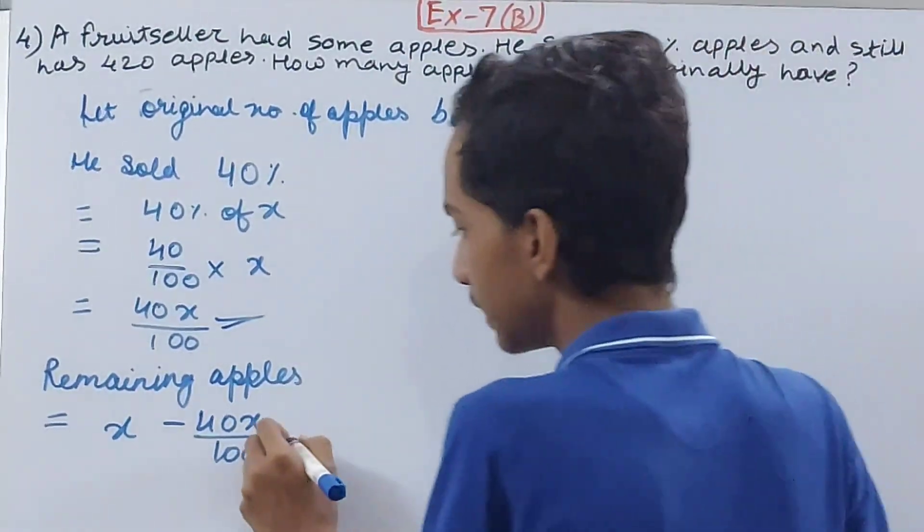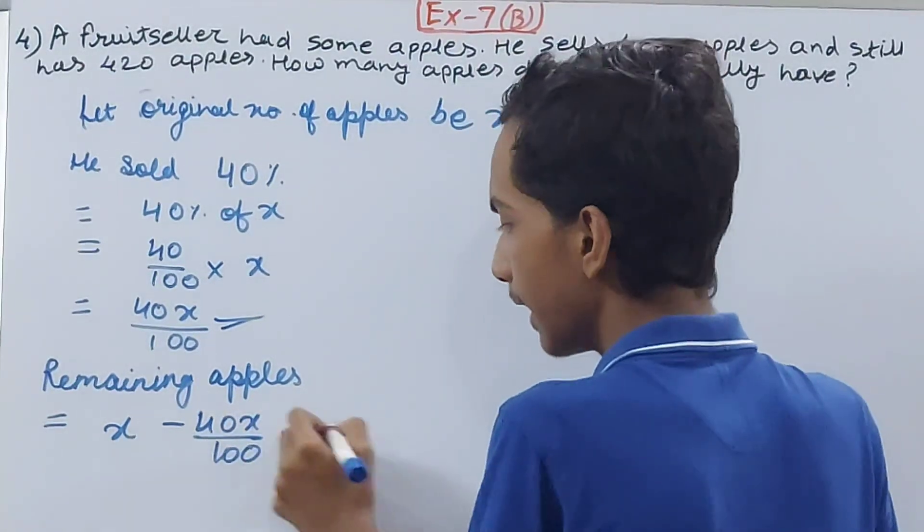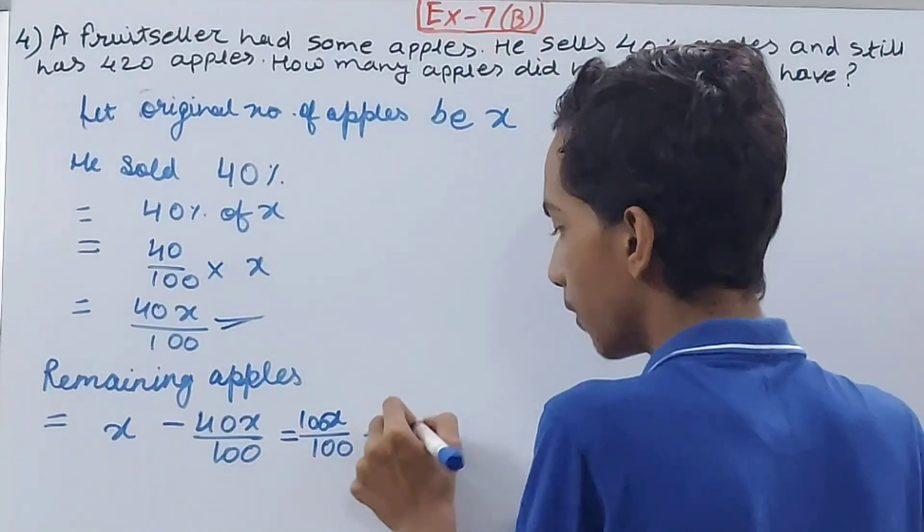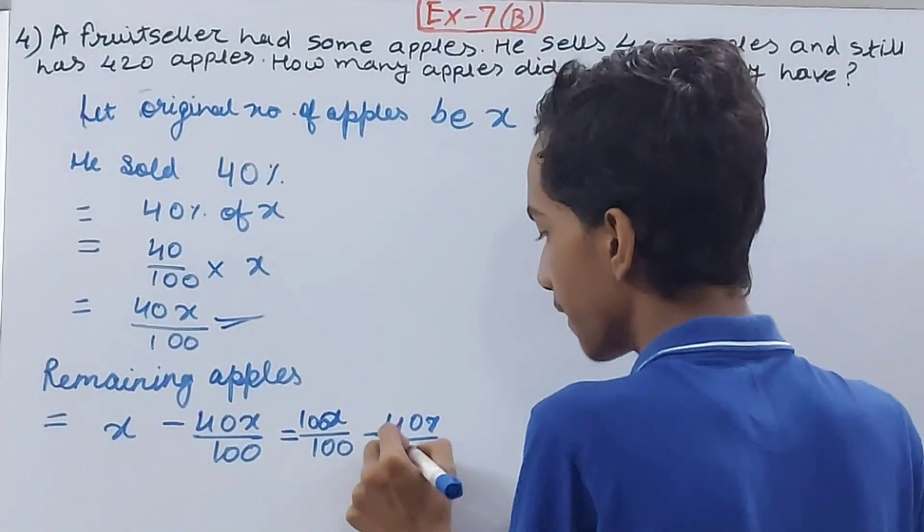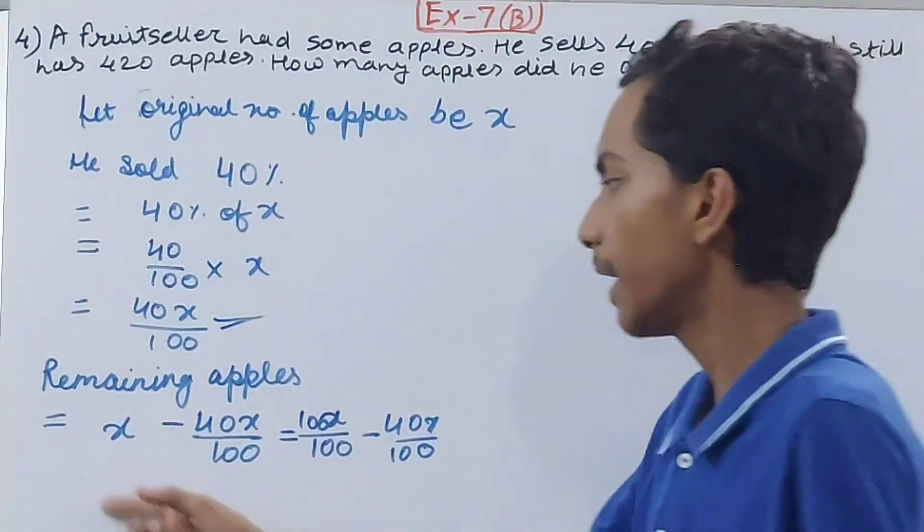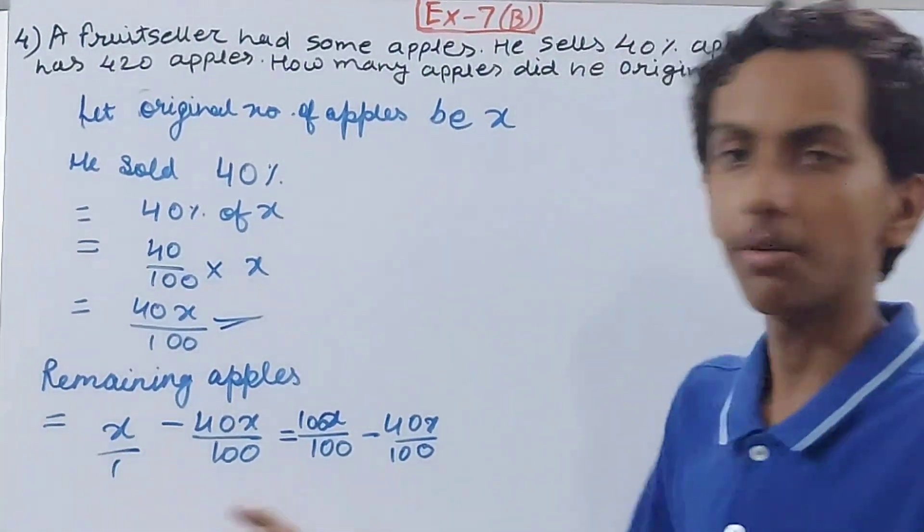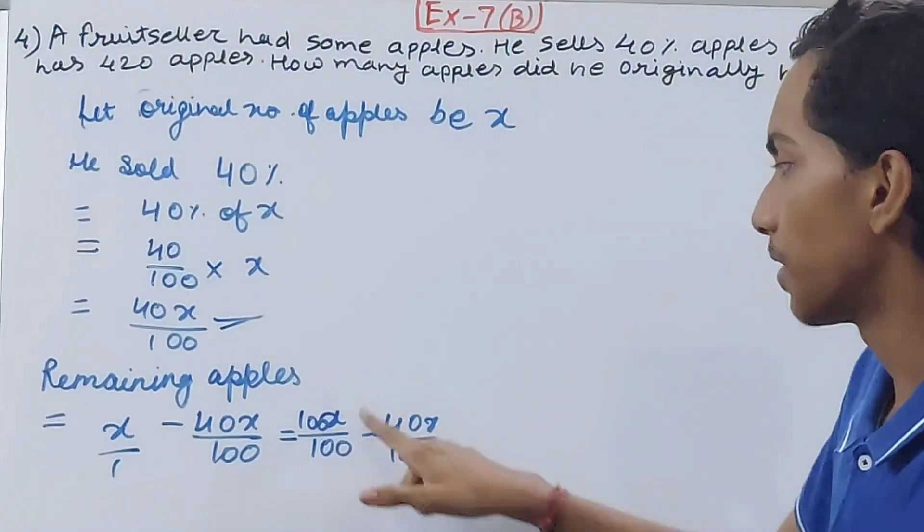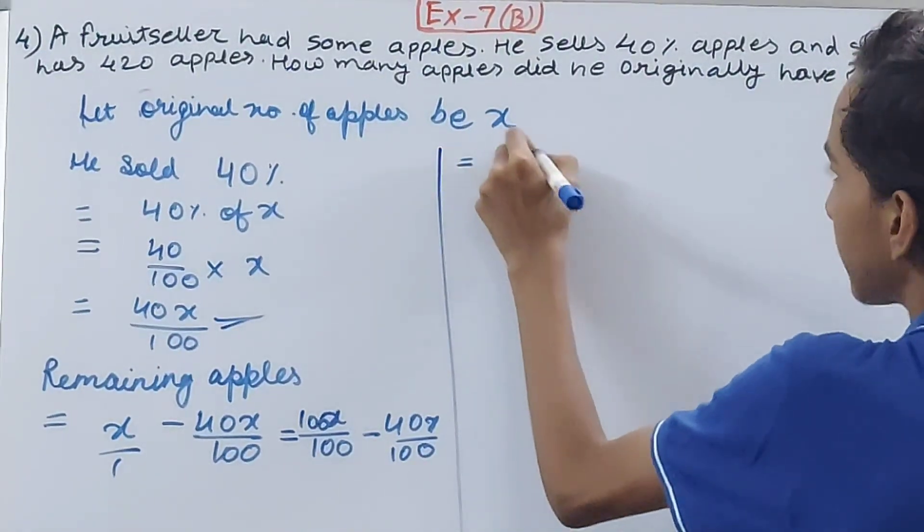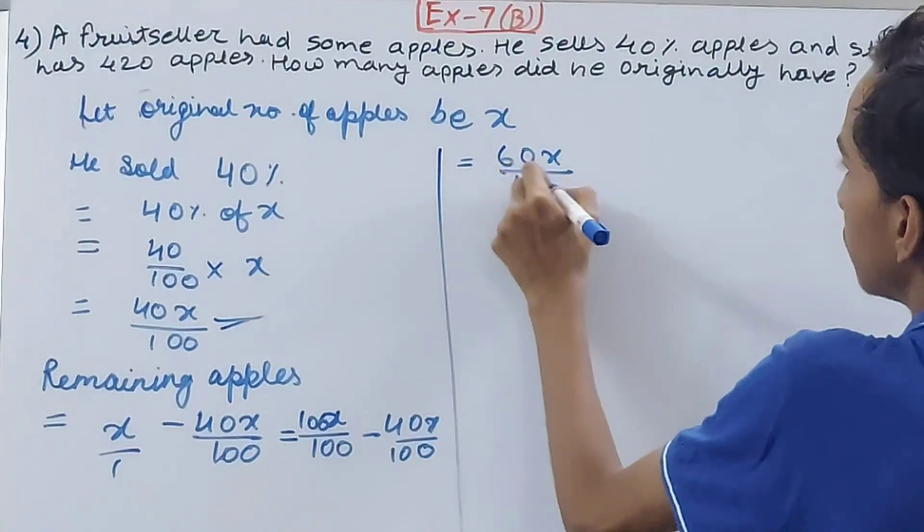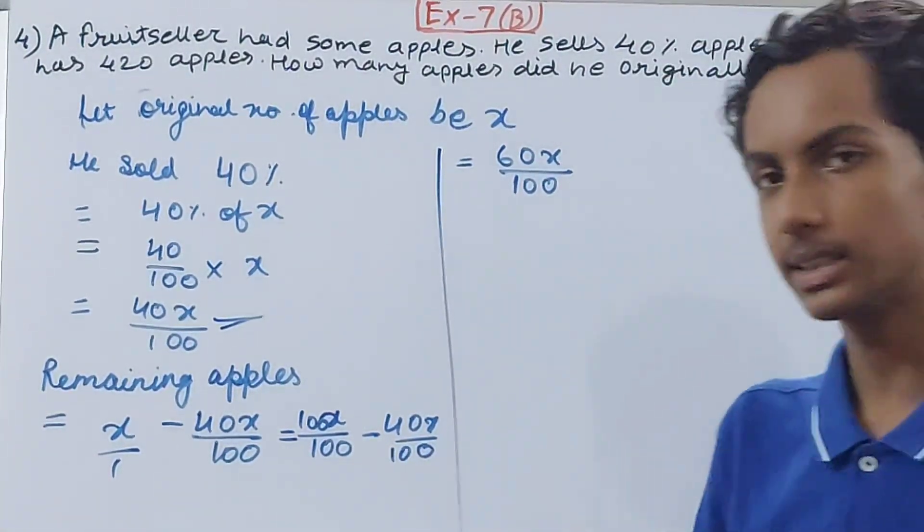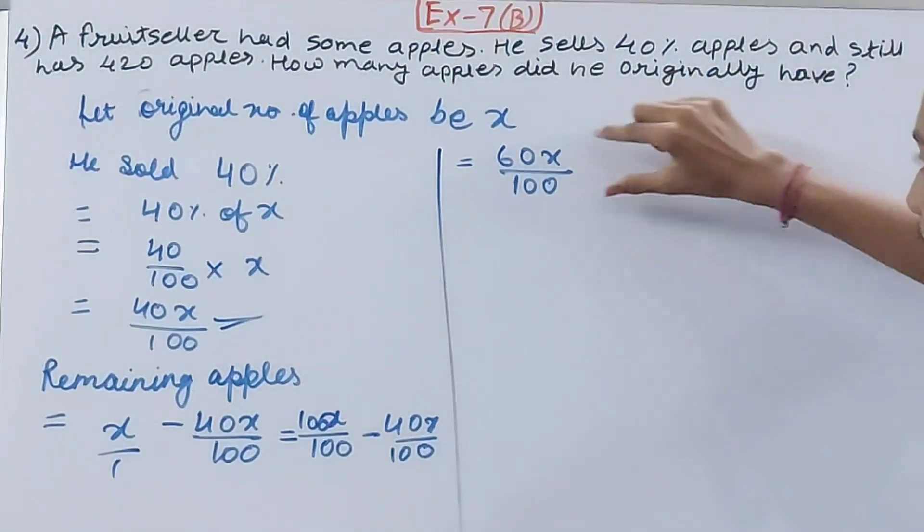I will show you why. First do this. See, x will become 100x upon 100 minus 40x upon 100. Okay, x minus 40x by 100, right? So 100, and here 1 was there, so 100 there. LCM is 100, so 100x minus 40x. This I will continue here. You will have 60x by 100 here, right? Because again see, 100 minus 40, that is 60x. This is the number of apples that are left with him after selling these many apples.